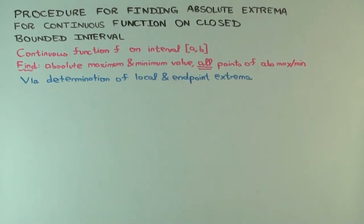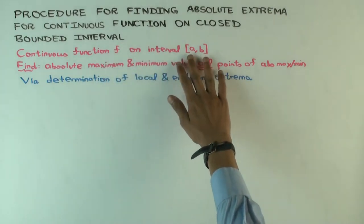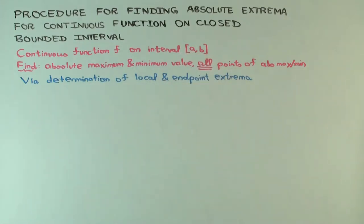In this talk we are going to discuss how to find the absolute max and min for a continuous function f on a closed interval [a, b]. It's bounded and includes both endpoints. We know by the extreme value theorem that there exists an absolute maximum and there exists an absolute minimum.